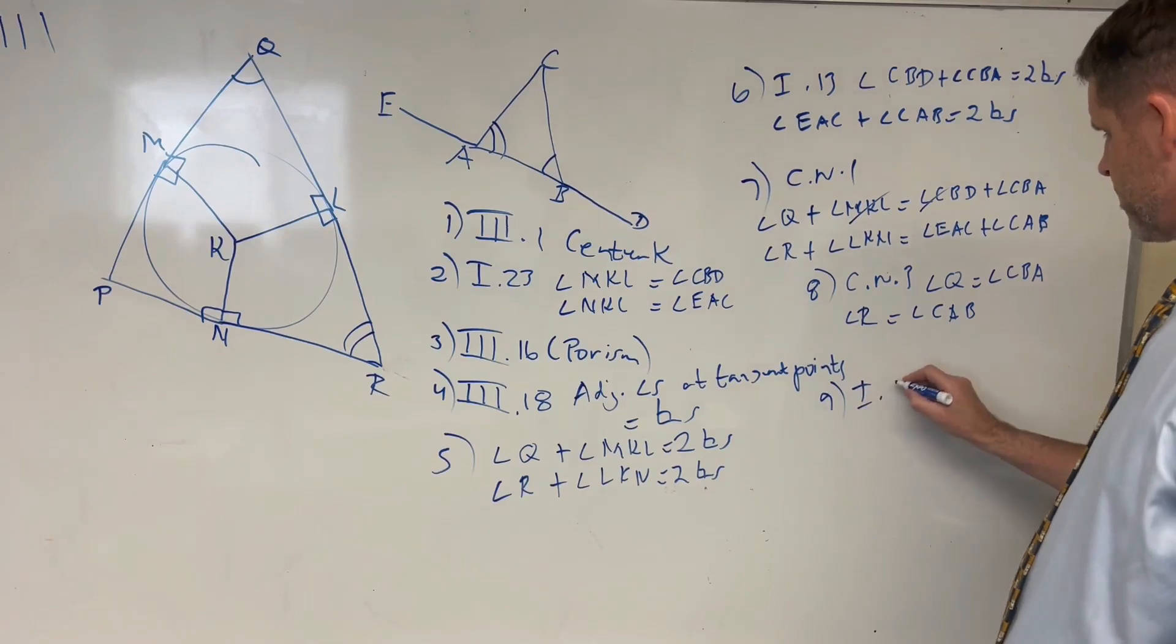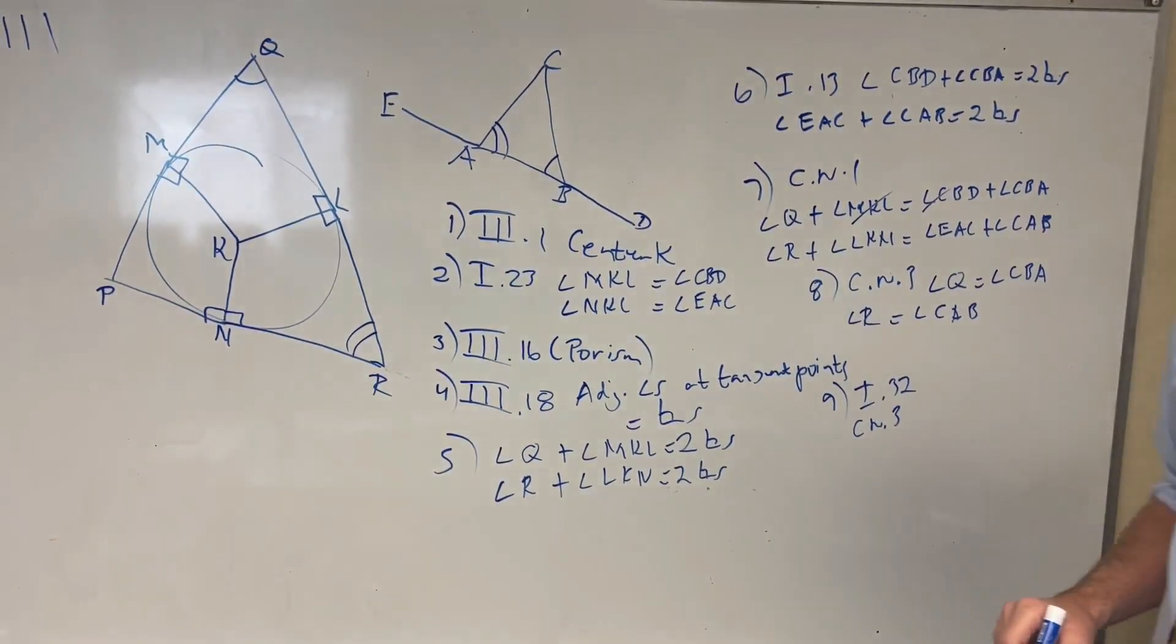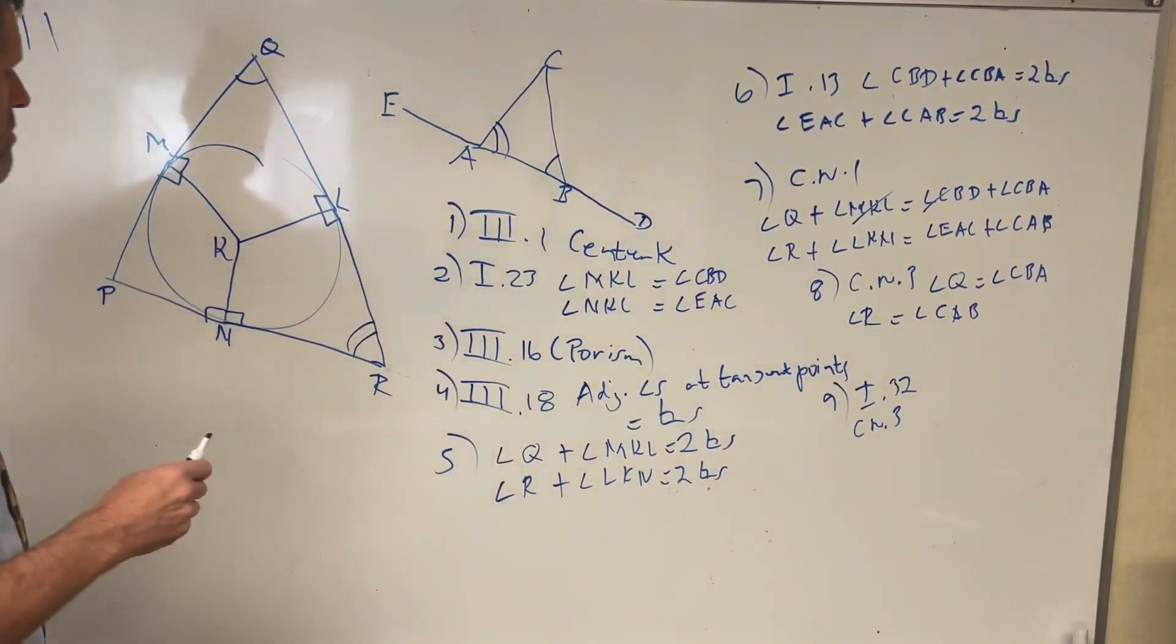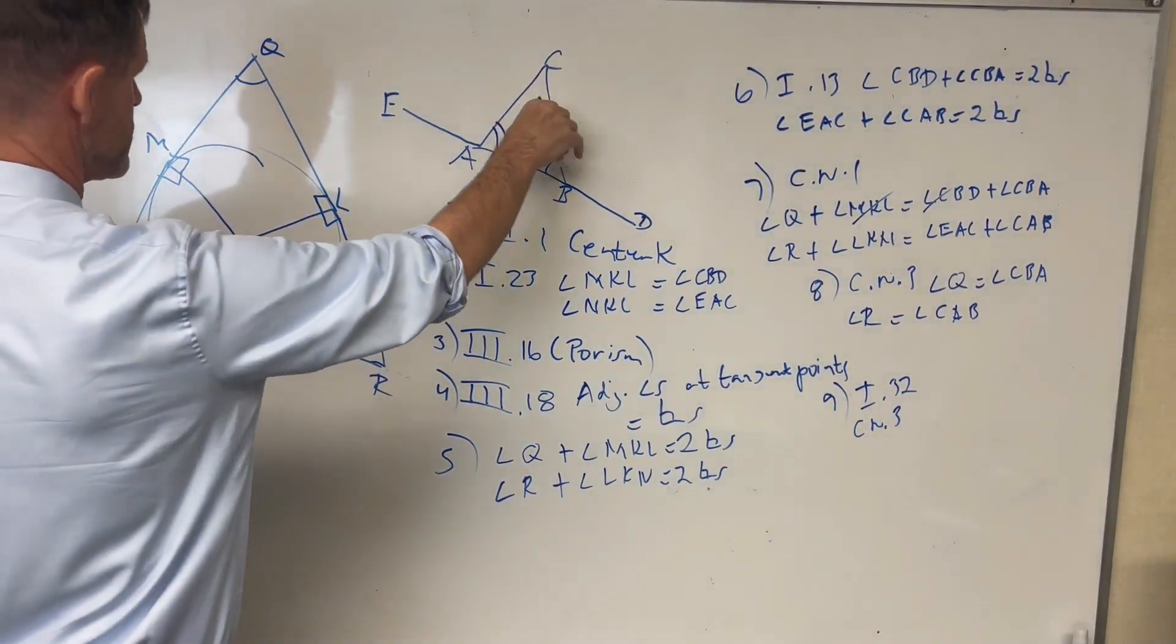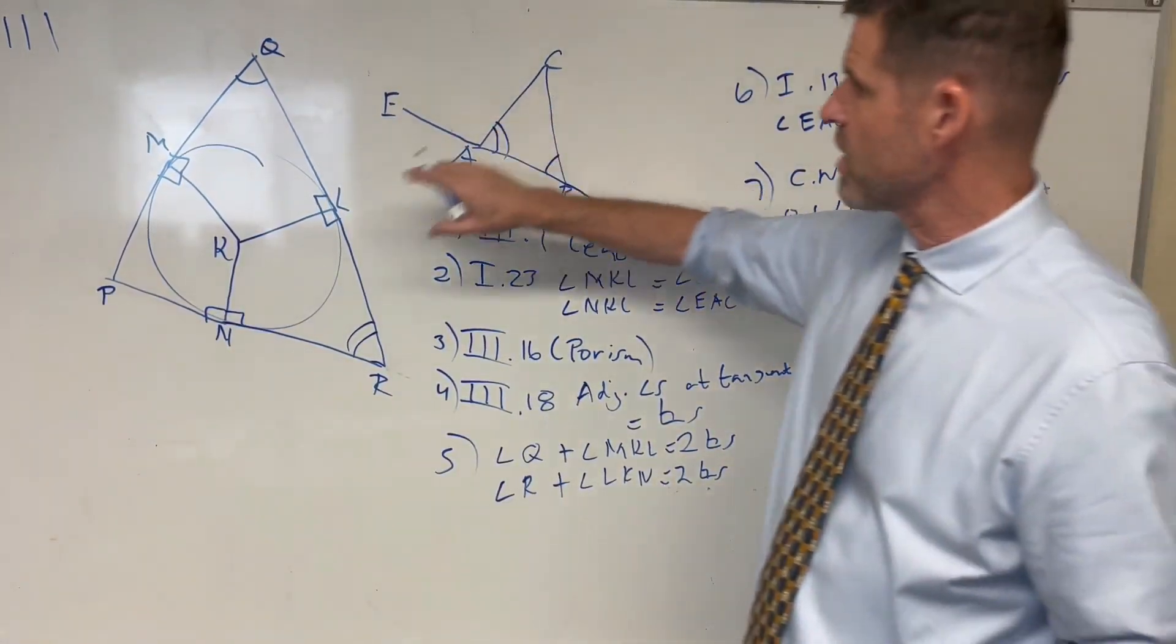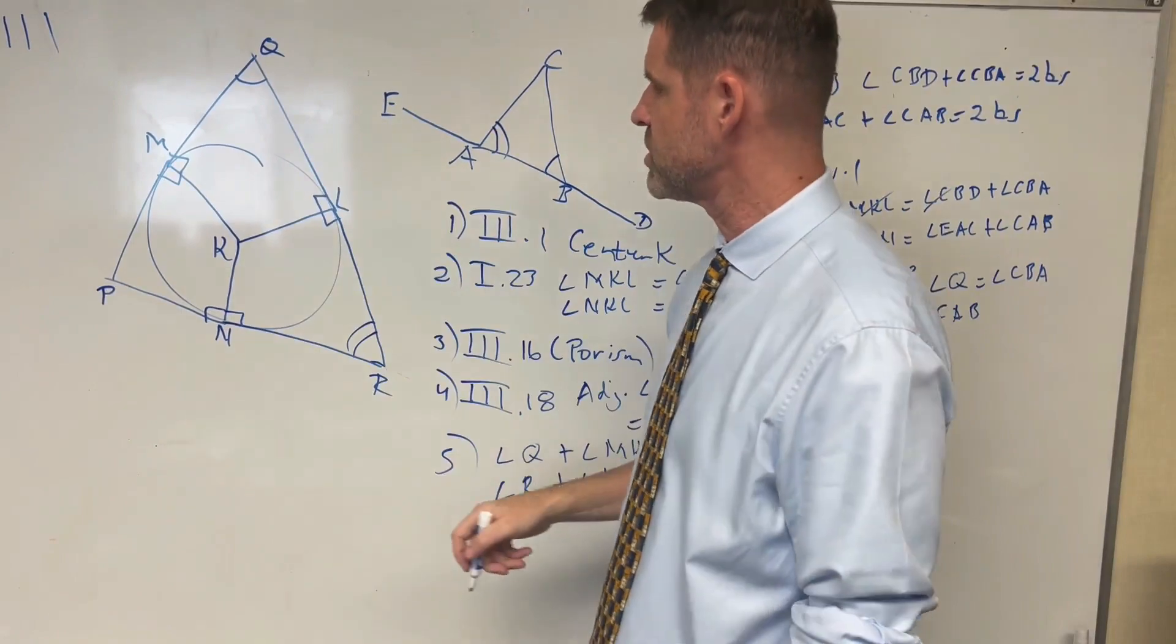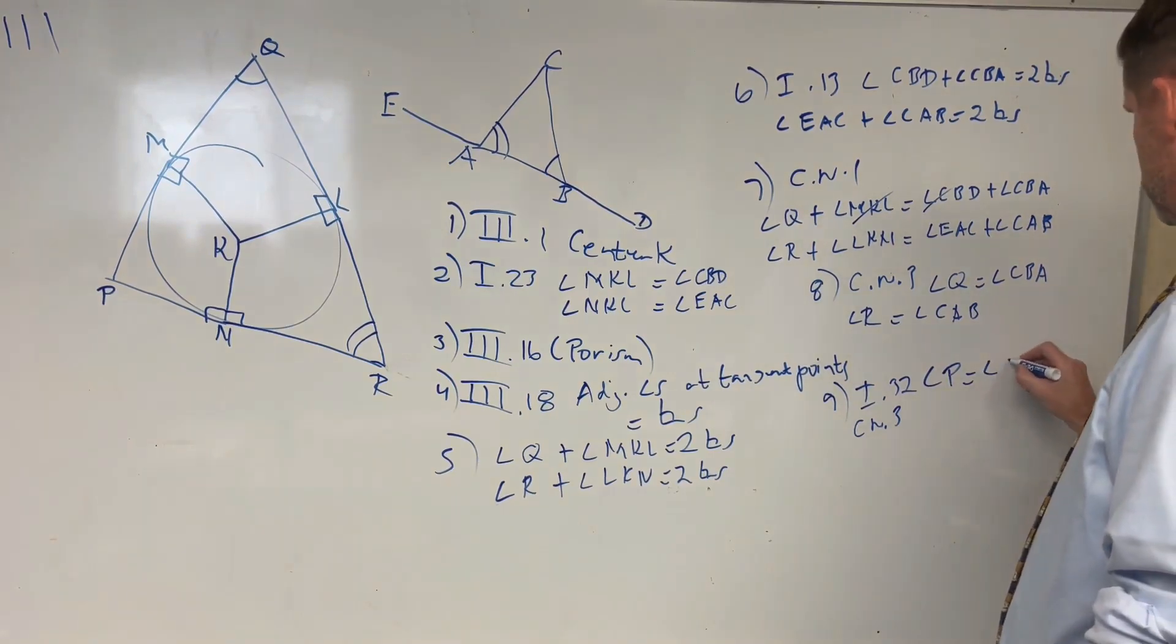Using proposition 32, and though it doesn't say it in the text, think common notion number three, we can, because we have two triangles, namely P, Q, and R, and C, B, and A, with two angles equal respectively, then the remaining angle must be equal. Because with the two triangles, we know there are three angles, add up to two right angles, and then we subtract the equals, namely the two equal angles from the two right angles, which would leave us with angle P, angle P equaling the angle at C.